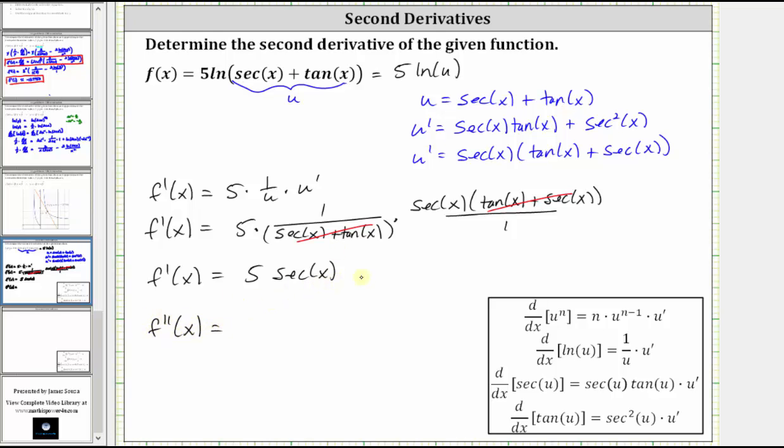The second derivative is equal to the derivative of five secant x, which is five secant x times tangent x.